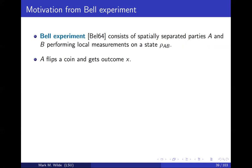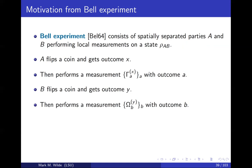So it consists of spatially separated parties, we call them Alice and Bob, and they perform local measurements on a quantum state. Alice flips a coin and gets an outcome x, then based on the value x she performs a measurement that has the outcome a. Similarly, Bob flips a coin, gets the outcome y, based on the outcome y he chooses a measurement to perform on his system and it'll have the outcome b.